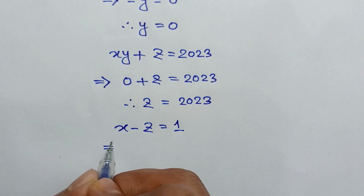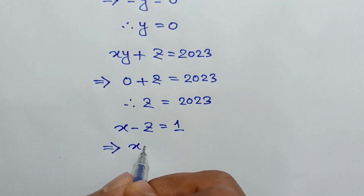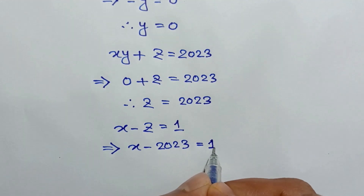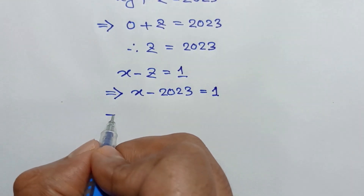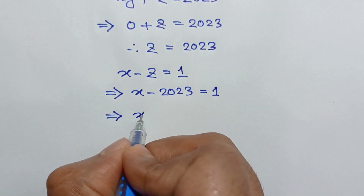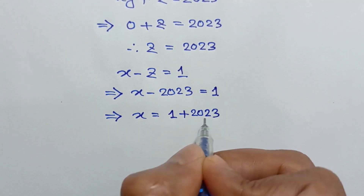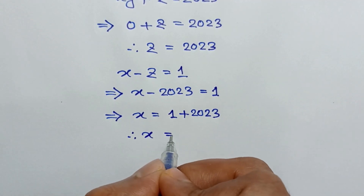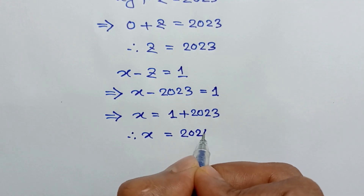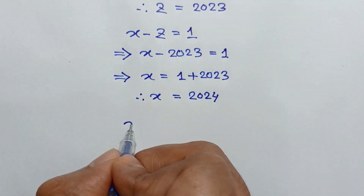From equation 4, x minus z equals 1. Substituting z equals 2023, we get x minus 2023 equals 1, so taking 2023 to the right side, x equals 1 plus 2023, which gives x equal to 2024.